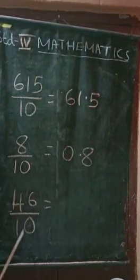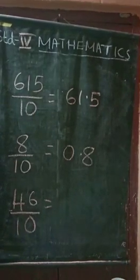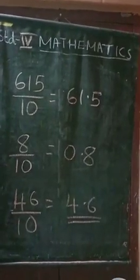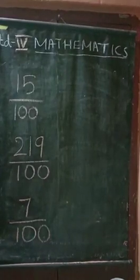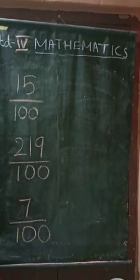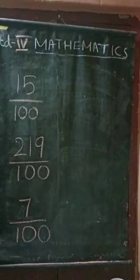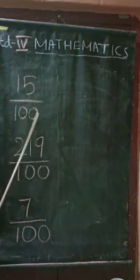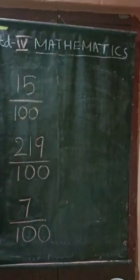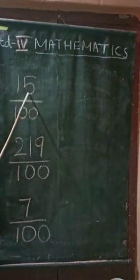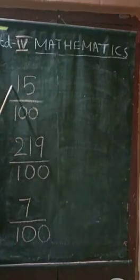Now, we are going to write the decimal form of fractions having 100 as the denominator. The denominator 100 has two zeros, so the decimal is equal to two digits after the decimal point. For example, 15 by 100.